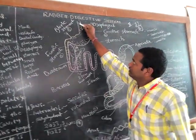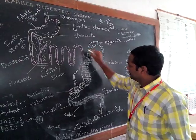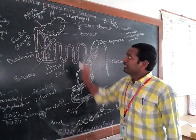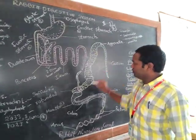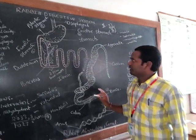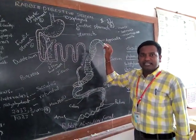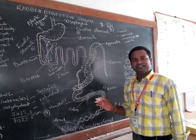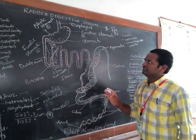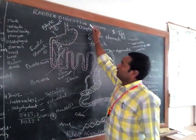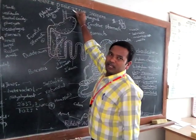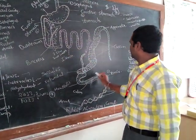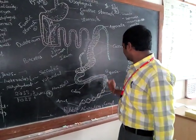The alimentary canal starts at the mouth and ends at the anus — it is a longitudinal tube. The parts of the alimentary canal sequentially are: mouth, vestibule, buccal cavity, pharynx, esophagus, stomach, small intestine, large intestine, rectum, and anus. The digestive glands include: salivary glands, gastric glands, liver, pancreas, and intestinal glands.